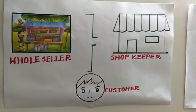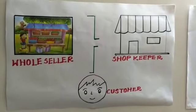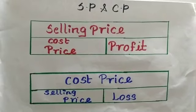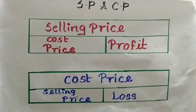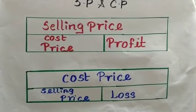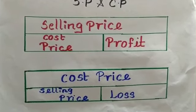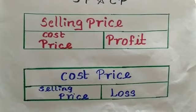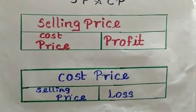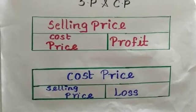The price at which the shopkeeper sells his goods to the customer is known as the selling price. Today we are going to see how to find the selling price and the cost price. I am going to explain about two bar models. These models will help you to understand the relationship between the terms: selling price, cost price, profit and loss.